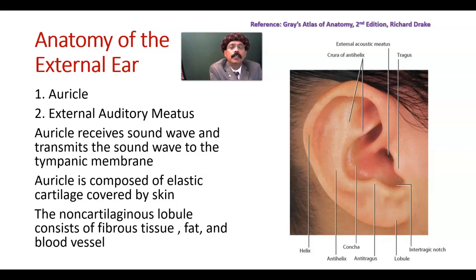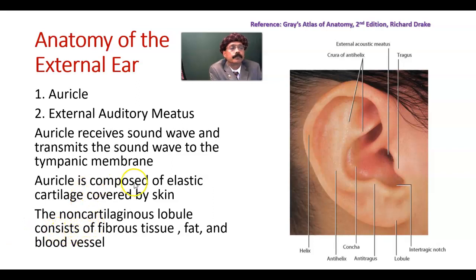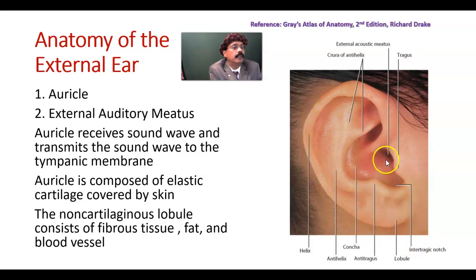The external ear has two parts. One is the auricle, and another one is the external auditory meatus. This is the auricle and this is the external auditory meatus.